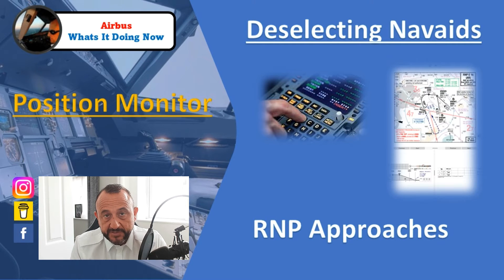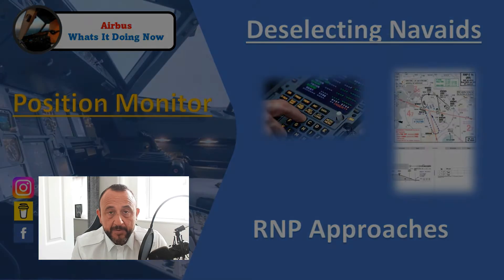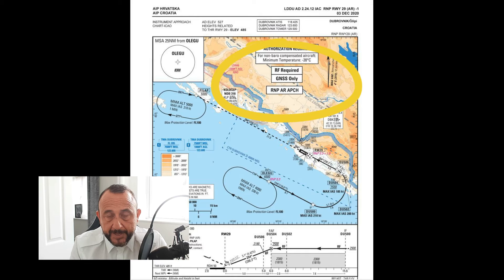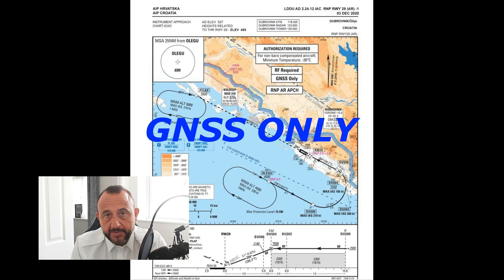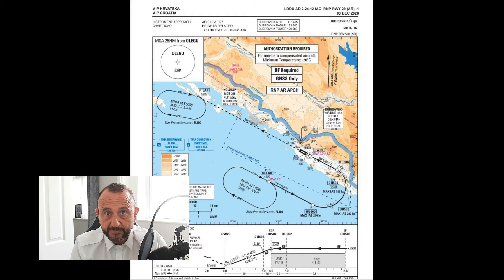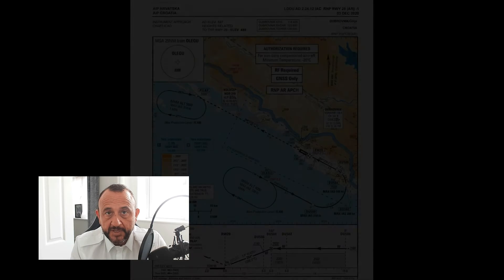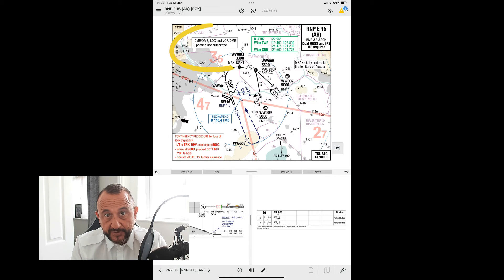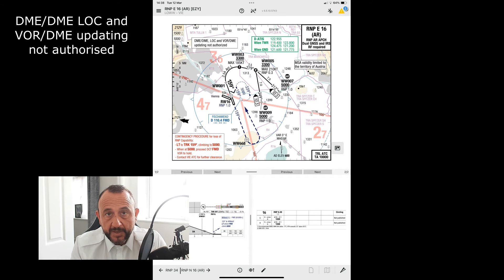That information will be presented to you in a number of ways — it may well be on the charts, as I show you an example here. It may also be in the approach charts information such as the airport information, by whichever provider gives you your approach charts, whether it be Jeppesen or Lido.